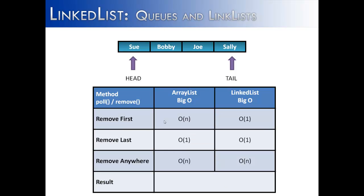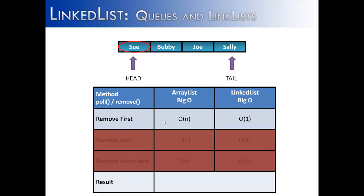The final operation we do with a queue is removing the first item, which corresponds to the poll or remove methods of the LinkedList class. We don't care about removing an item anywhere inside the list or the last item — all we care about is removing the first item. With an ArrayList, you have to fill the void left by removing the first item, giving it a Big O of O(n). A LinkedList is not a contiguous block of memory, so the first item can be removed without doing anything to the rest of the data, giving it a Big O of O(1). This is probably the biggest advantage of a LinkedList over an ArrayList for a queue.